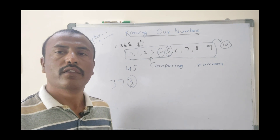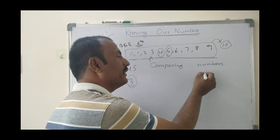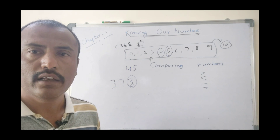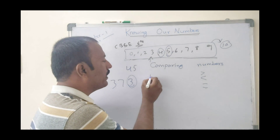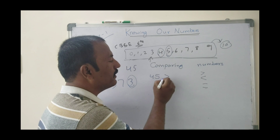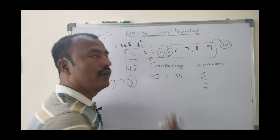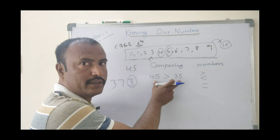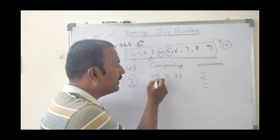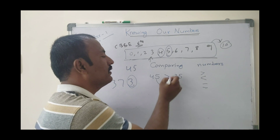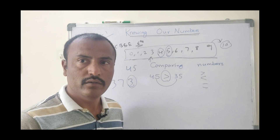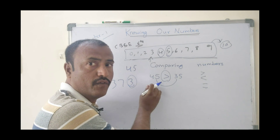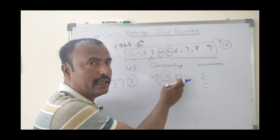Whenever two numbers are there, we can compare them with symbols like greater than, less than, or equal to. Suppose 45 is greater than 35 — here two numbers are there, and we are comparing these two numbers with the symbol of greater than. That means 45 is greater than 35.